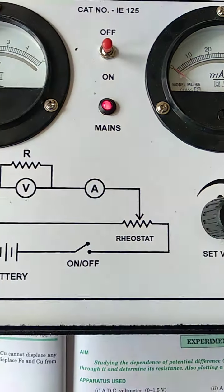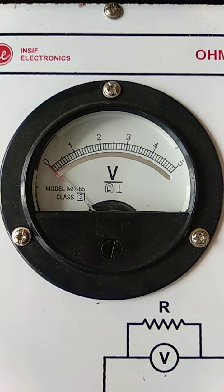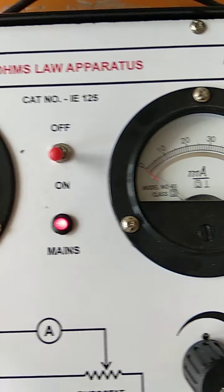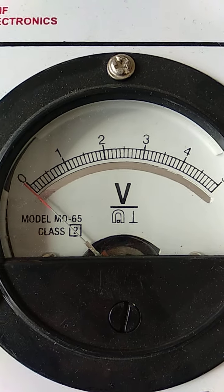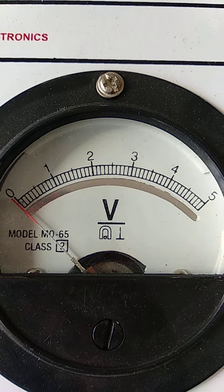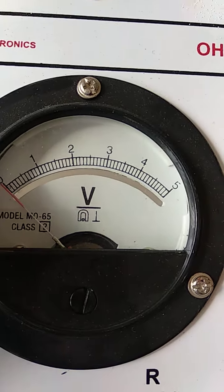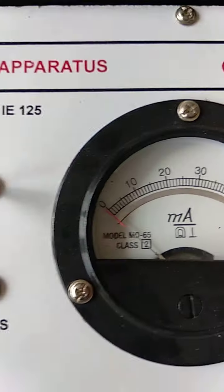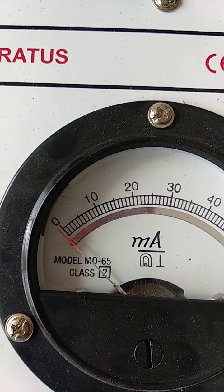Now I will switch on this, you can see here. And first of all we will calculate the least count of this voltmeter and least count of milliammeter. How much of the least reading can this voltmeter measure? You can see here, 0 to 1. And in between that we have 10 different points, 10 divisions. Also here, in between that we have 10 divisions.